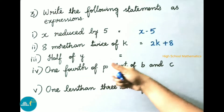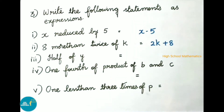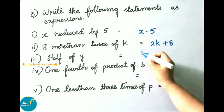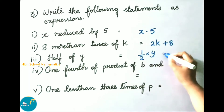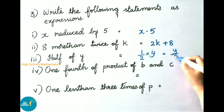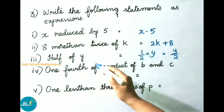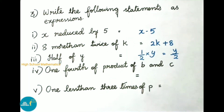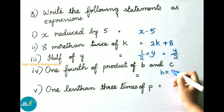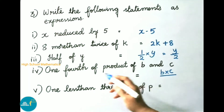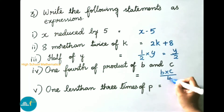Third, 'half of y' — half means one-half, so the answer is y by 2. Fourth, 'one fourth of the product of b and c' — product of b and c is b times c, and one fourth means divided by 4, so the answer is bc by 4.